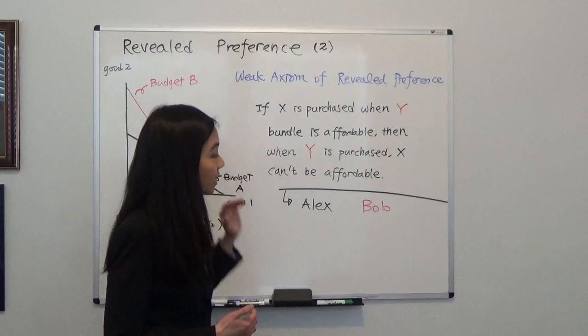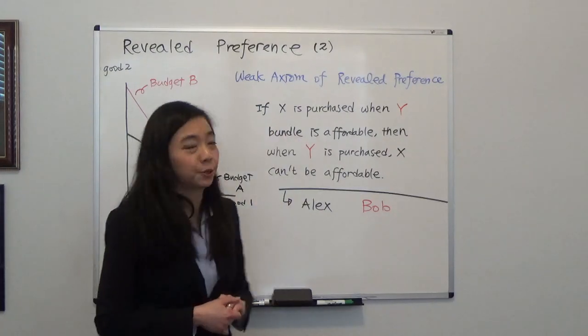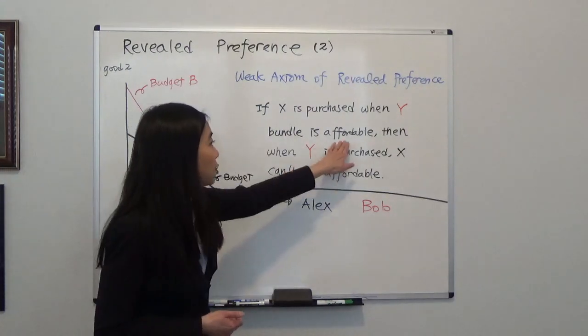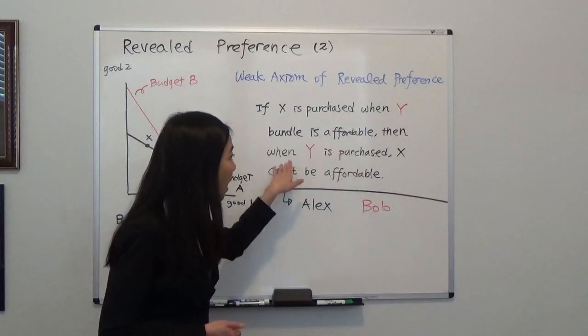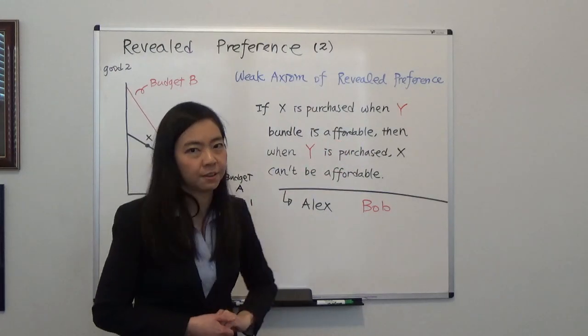And Hal Varian, he said, use plain English. If x is purchased when y is affordable, then when y is purchased, x cannot be affordable.